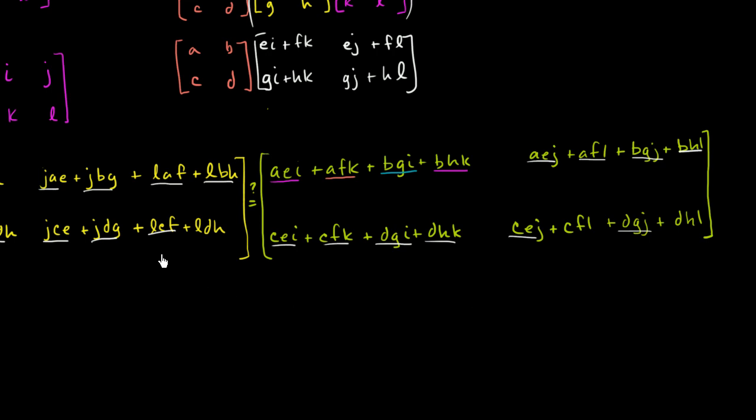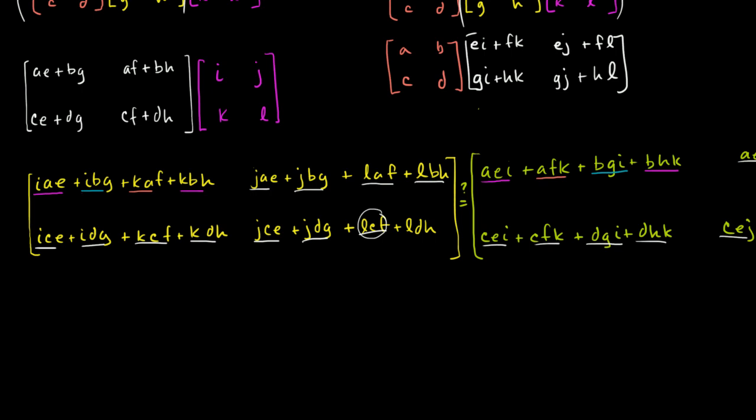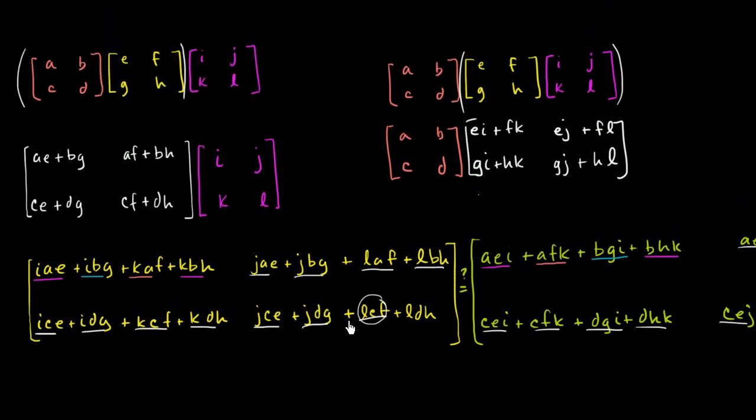LCF, or is that LC? So let's see. LDH is this right over here. And so this one must be an LCF. It's the same thing as CFL. Is this one right over here an LCF? Let me make sure, because that would throw a major monkey wrench into the whole operation. So this entry right over here is going to be, we get that from multiplying the second row times the second column. And we're going to get JCE plus JDG. And then we have LCF. Yeah, that's LCF plus LDH.